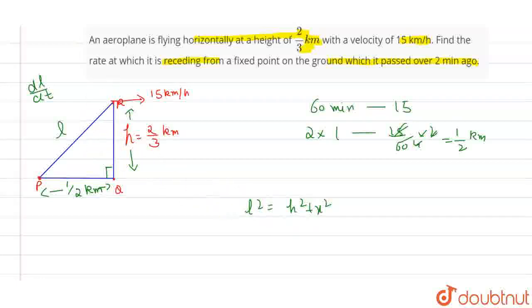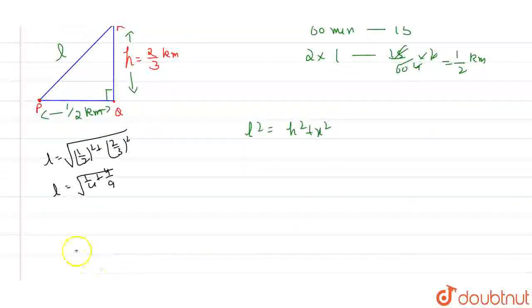How can we calculate the value of l? l should be square root of 1 by 2 whole squared plus 2 by 3 whole squared. So this will become l equals square root of 1 by 4 plus 4 by 9, which is 9 plus 16 by 36 whole under root.